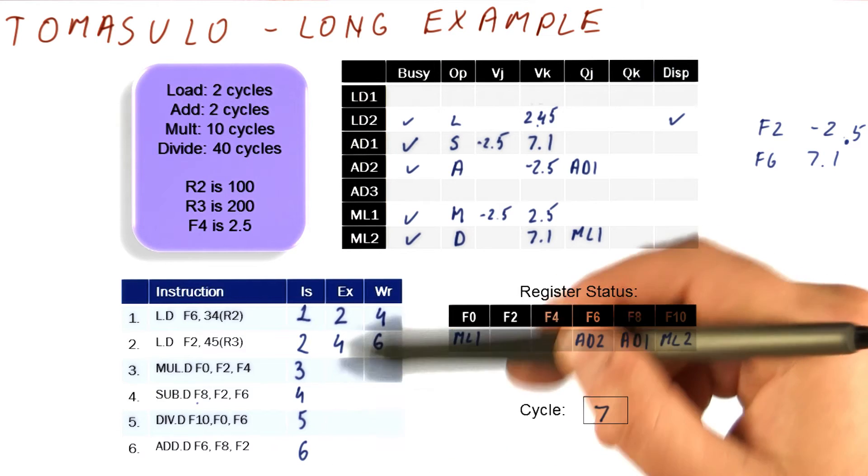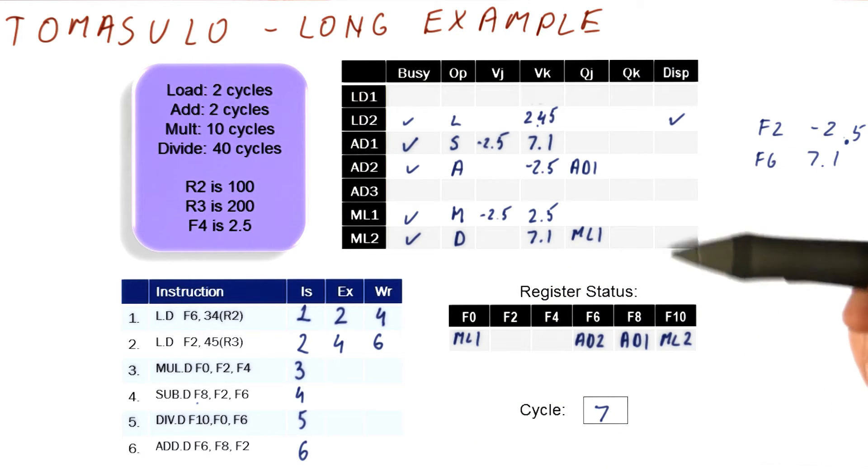In cycle seven, we no longer have any instructions to issue, so from now on we will not be issuing things.